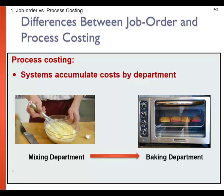Instead of accumulating work in process by job, we will accumulate costs by processing departments. A processing department is an organizational unit where work is performed on a product and where materials, labor, and overhead costs are added to the product. For example, in our bakery example used throughout this video, there are two departments: the mixing department and the baking department.